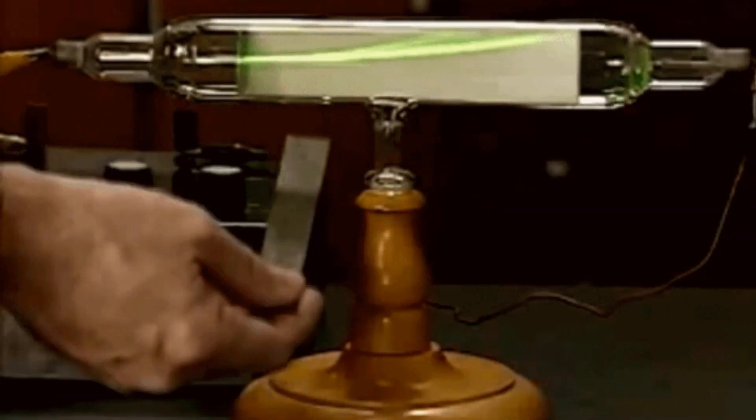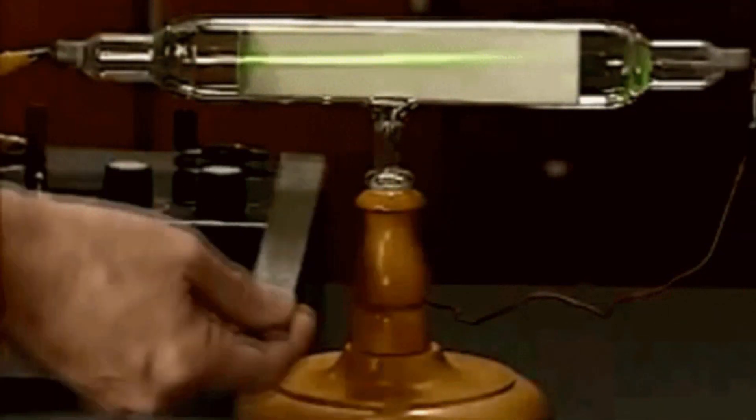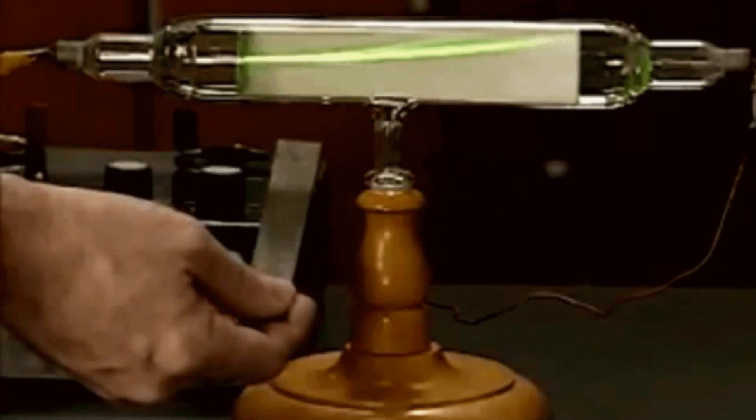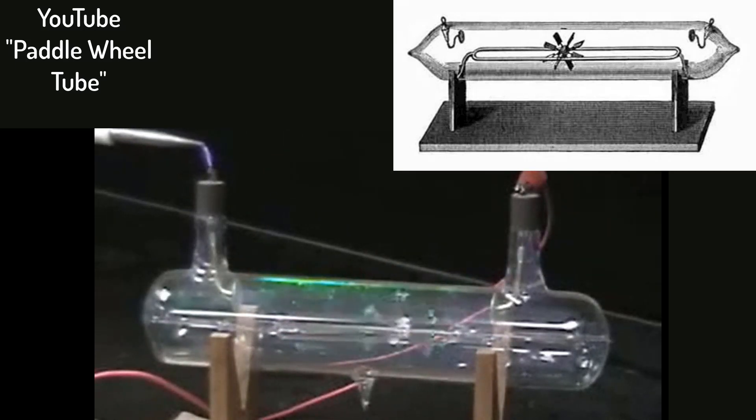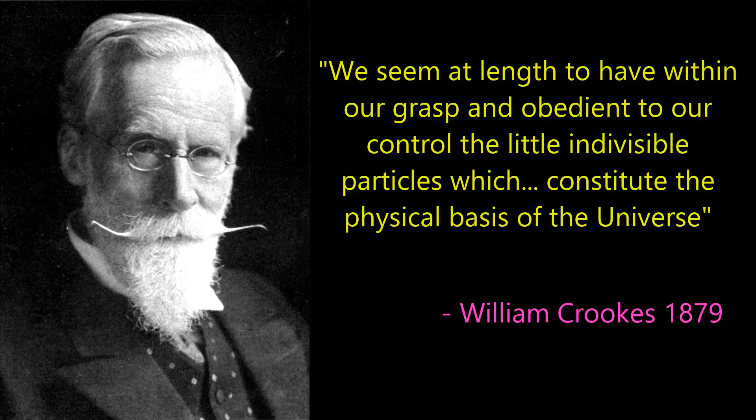After all, as Plucker had first noticed with the Geissler tubes, the position of the rays could be moved with a magnet and magnets were known to move current carrying wires, but to not move beams of light. To prove his point, Crookes built a tube with a little wheel inside it and found that the wheel would spin away from the cathode and towards the anode, which Crookes attributed to molecular pressure. In 1879, he wrote, quote, we seem at length to have within our grasp and obedient to our control, the little indivisible particles, which constitute the physical basis of our universe.